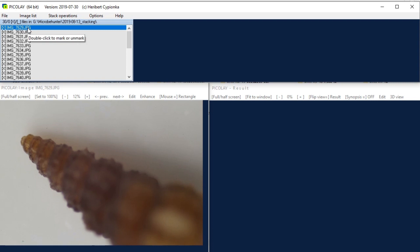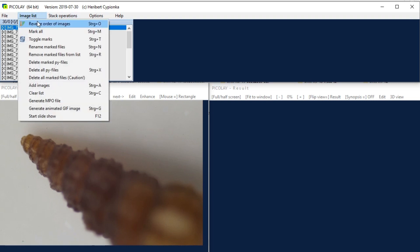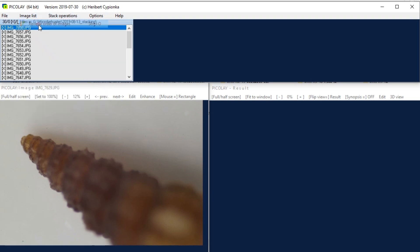So I have to reverse them and the program is able to do that by going to the menu image list and then reverse order of images because the top image should be the one that is in focus at the very top of the specimen and then by clicking on it you can again control and check the images.